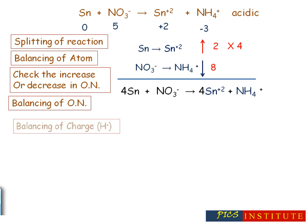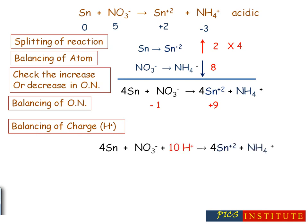The next step is balancing of charge. Since the reaction is in acidic medium, charge will be balanced by H⁺ ions. On the left-hand side the charge is −1, on the right-hand side it is +9, so the difference in charge is 10 units. We will add 10 H⁺ ions to the left-hand side.